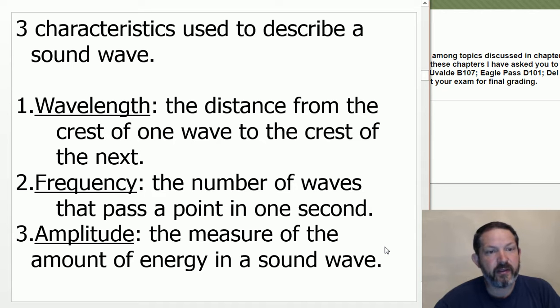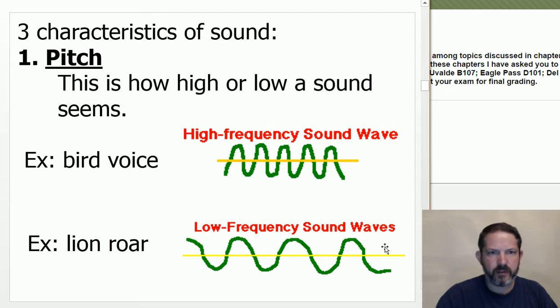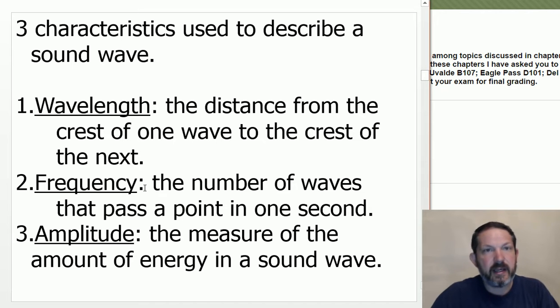There's the wavelength, the frequency, and the amplitude. These are things about waves that apply to any waves. The wavelength, from a crest to a crest. Here's a crest, here's a crest. That's the wavelength. Here's a crest here, here's a crest here. That's the wavelength. This is a shorter wavelength than this one. A shorter wavelength means that it's a higher frequency. The frequency is the number of waves that pass a point in one second.